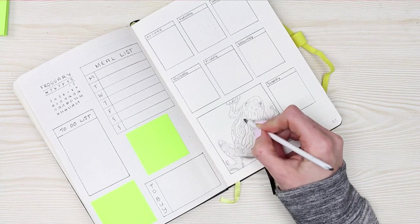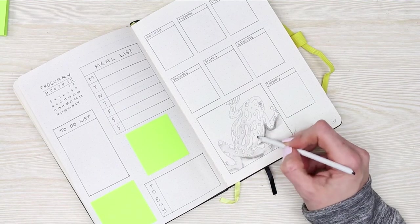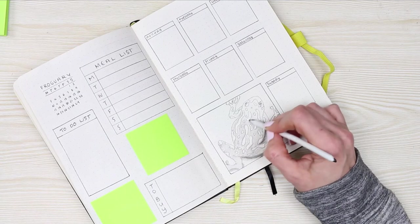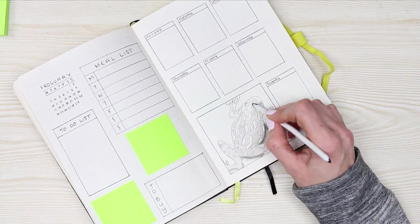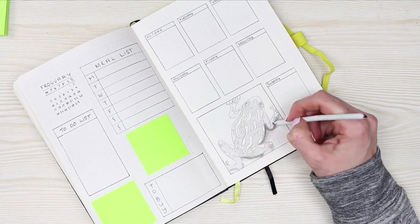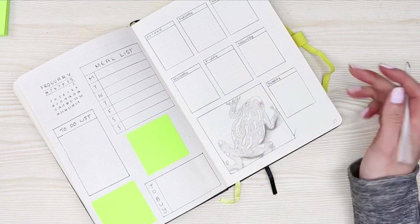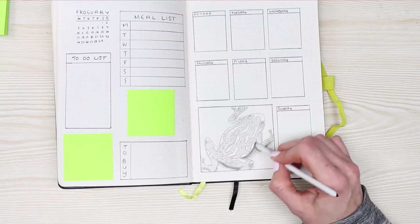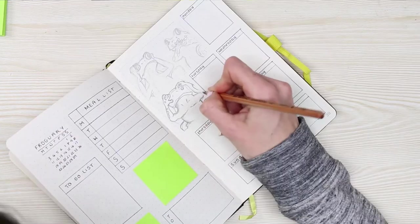It would have been really nice if I paid attention to what species of frog I was drawing, and then I could have written the name of the frog down. Maybe I'll do that next time if I ever do certain animals or something. I'll write down what species it is. I think that would look nice.